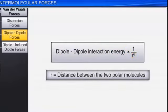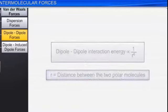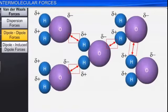Why is ion-ion interaction stronger? Because the dipole-dipole interaction energy is proportional to the 6th power of distance, and the energy decreases with the distance between the two polar molecules.